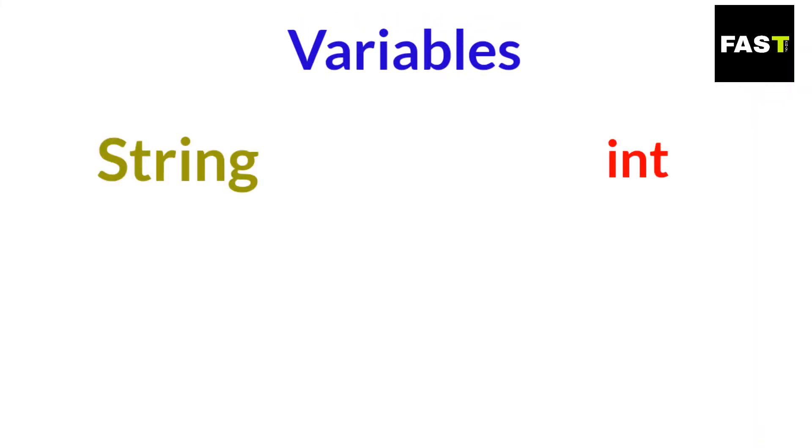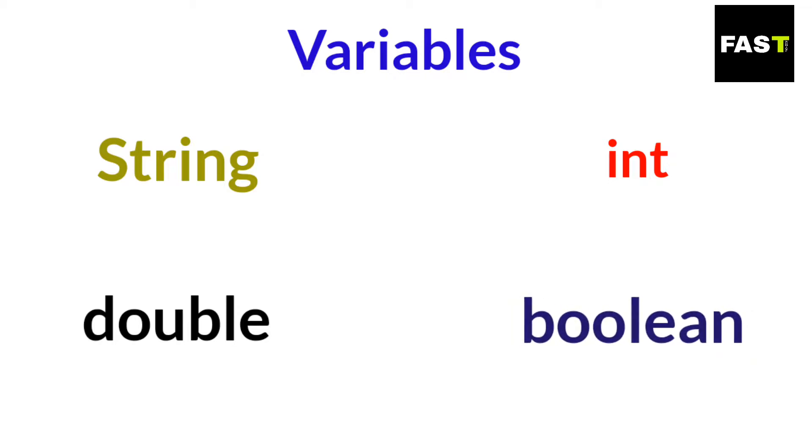We have already learned some variables: string, int, and double. In this video we will see a new variable — boolean.